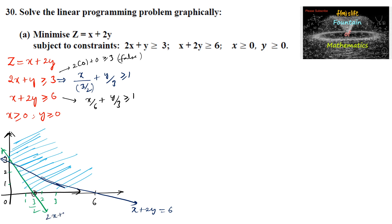So we have the line x + 2y = 6 and the line 2x + y = 3. For the second inequality, the origin gives 0 + 2(0) = 0, which is not ≥ 6 — false — so the shaded region is also away from the origin.